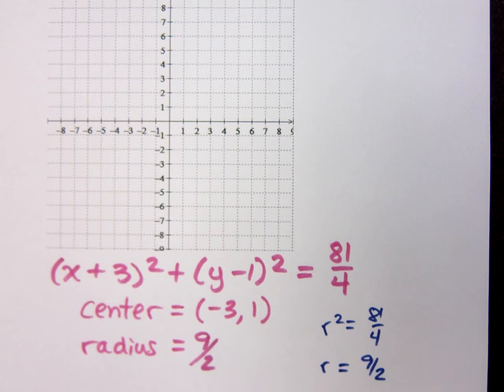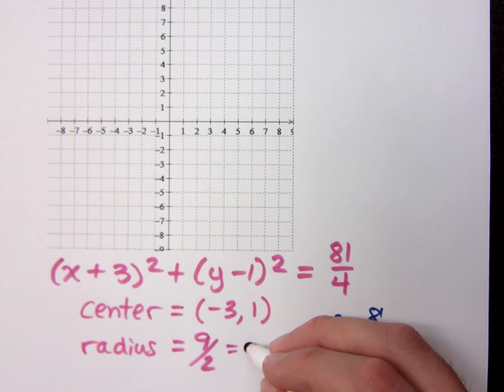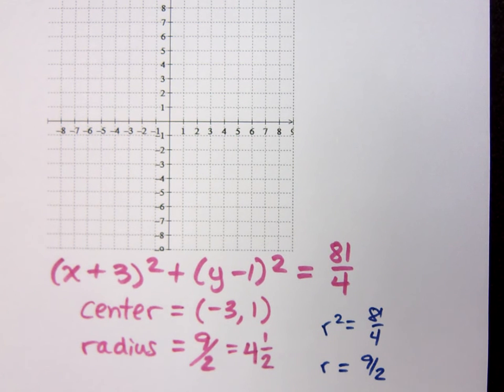What's a better way of looking at 9 over 2? Let's look at that as 4 and a half and see how that works out for us.